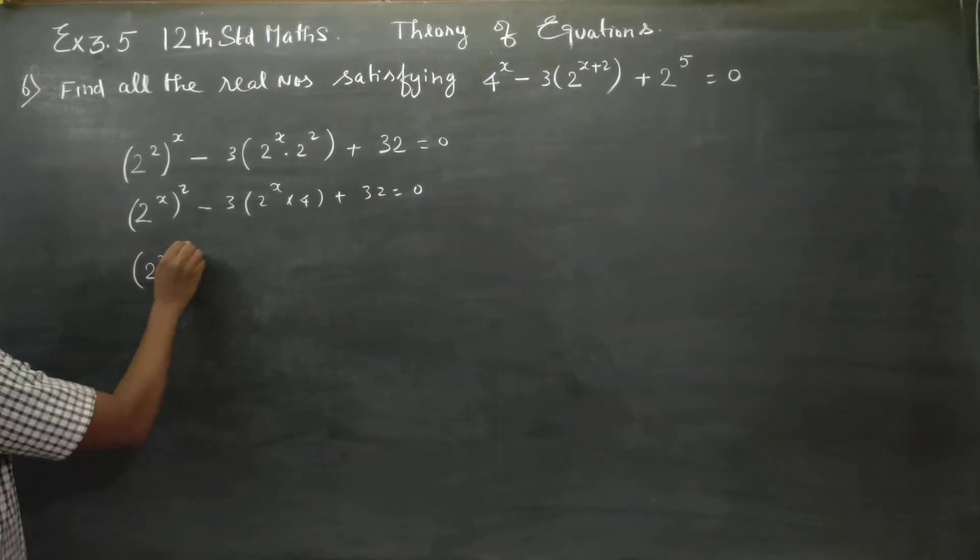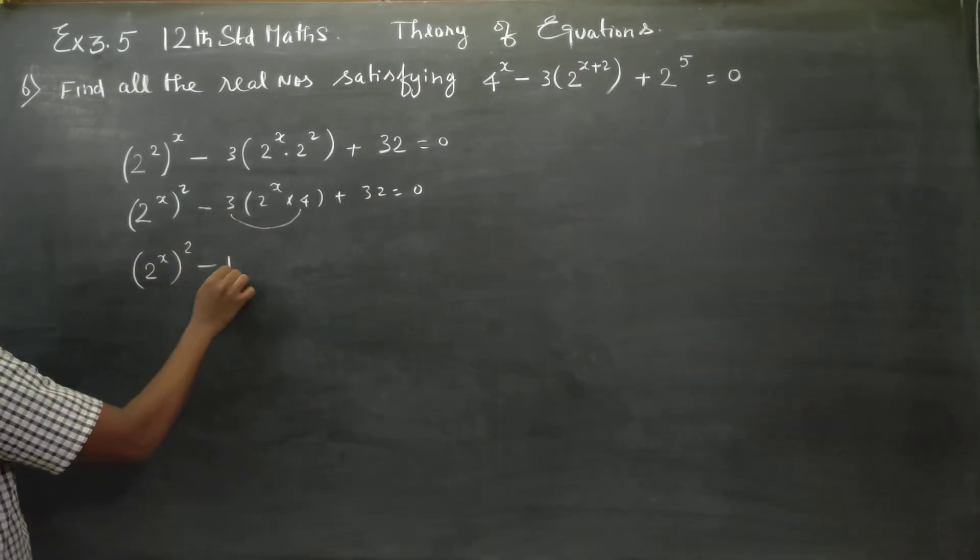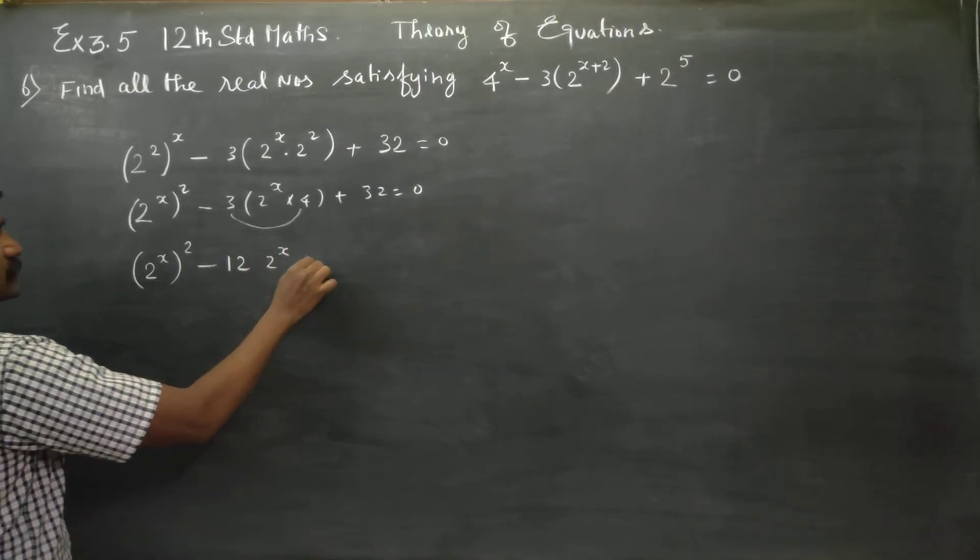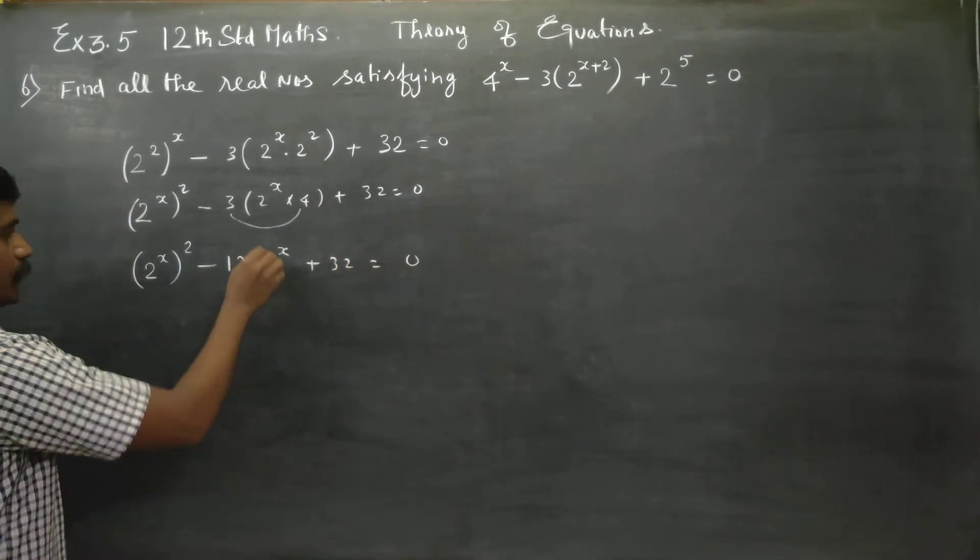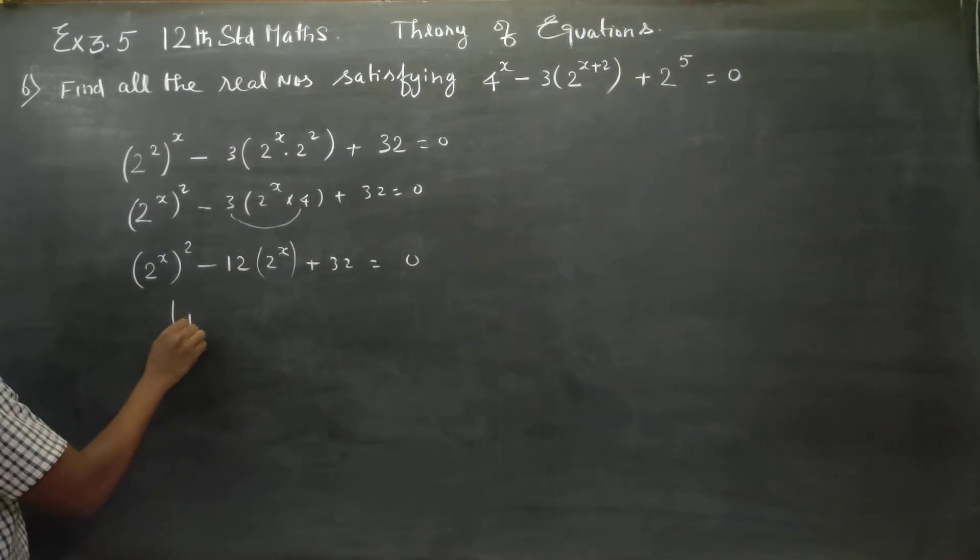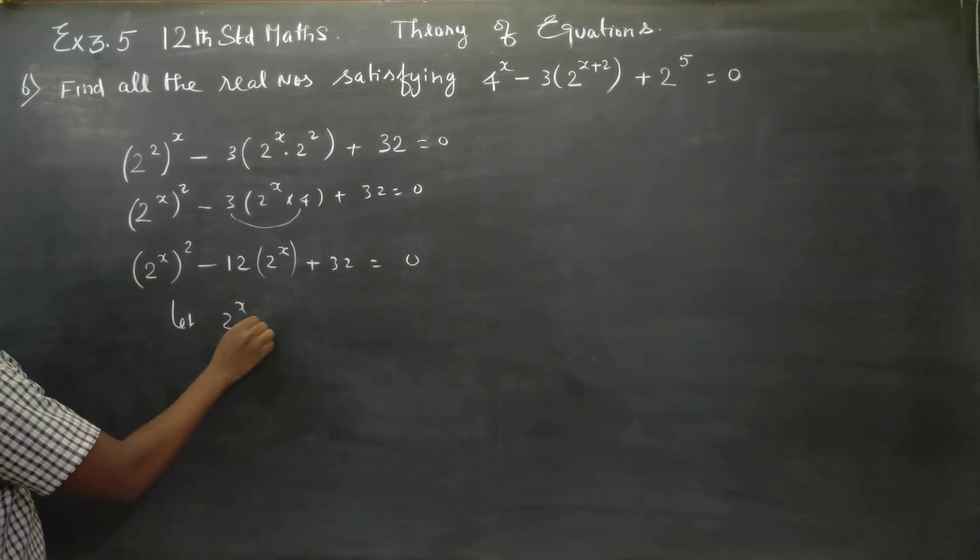(2^x)^2 minus 12(2^x) plus 32 equals 0. The idea is let 2^x equal y.